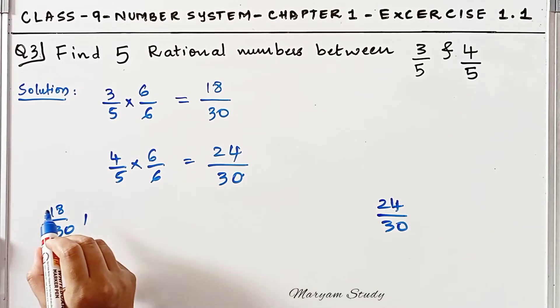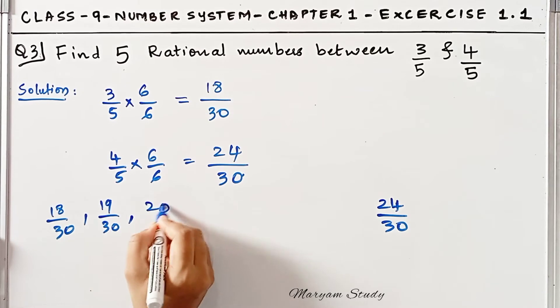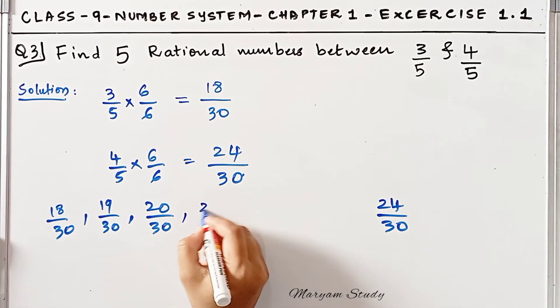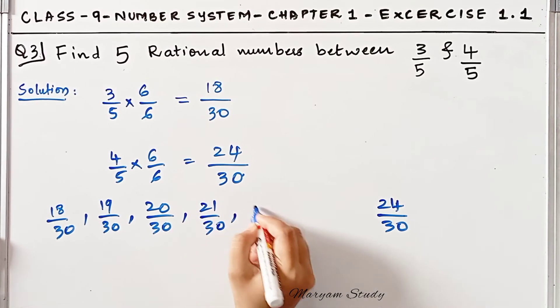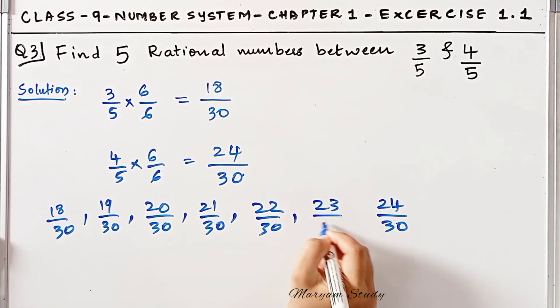Now I will write the rational numbers. After 18 comes 19: 19/30, 20/30. The denominators remain the same. 21/30, 22/30, and then 23/30.